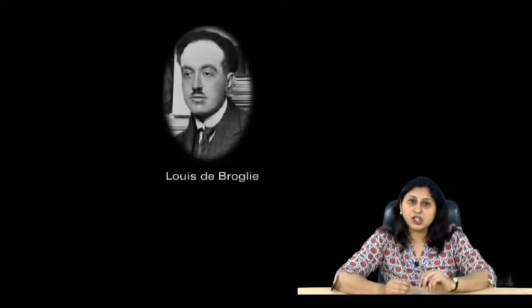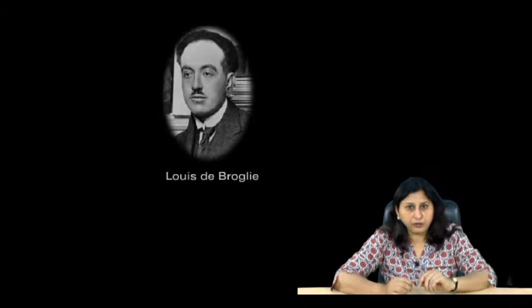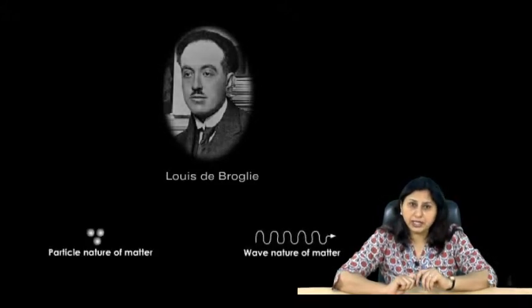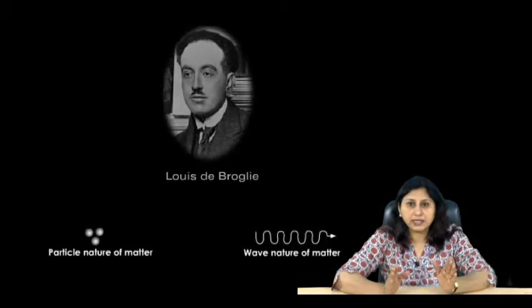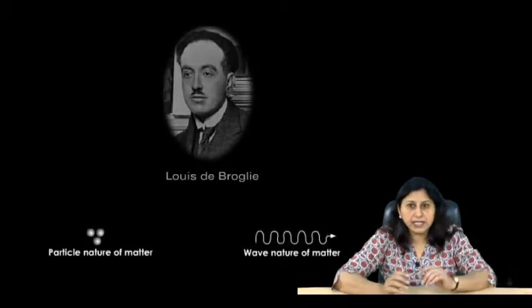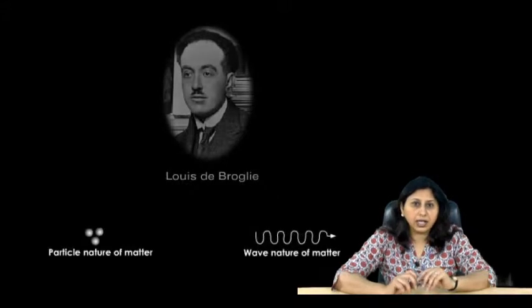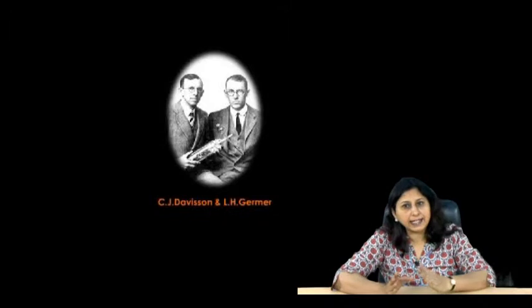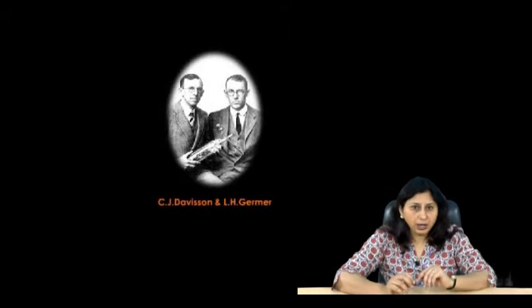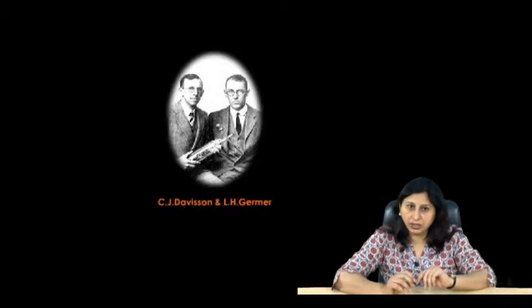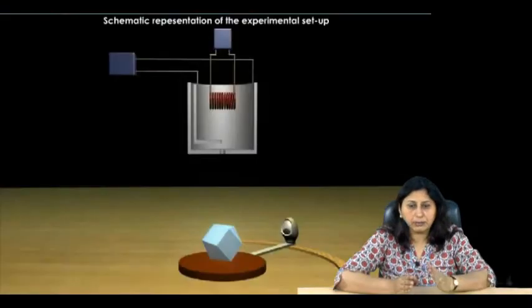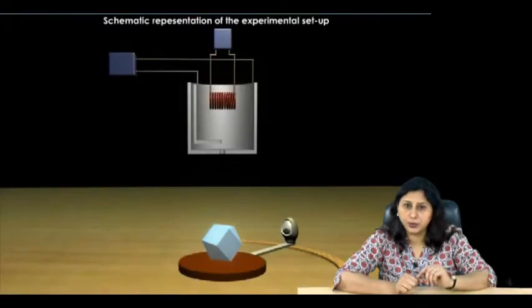Davison and Germer Experiment. In 1924, the French physicist Louis de Broglie postulated that all forms of matter display both wave and particle characteristics. According to this hypothesis, electron, just like light, has a dual nature. Two American physicists, C.J. Davison and L.H. Germer were the first to experimentally prove the wave nature of material particles in 1927.